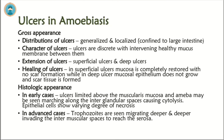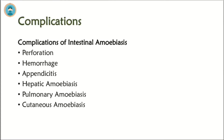Ulcers of amoebiasis — gross appearance: ulcers may be generalized or localized. They may be discrete with intervening healthy mucous membrane between them. Ulcers may be superficial or deep. In superficial ulcers, the mucosa is completely restored with no scar formation, while in deep ulcers, mucosal epithelium does not regenerate and scar tissue is formed. Histologic appearance — in early cases: ulcers are limited to the muscularis mucosae. In advanced cases, trophozoites are seen migrating deeper and deeper, invading inter-muscular spaces.